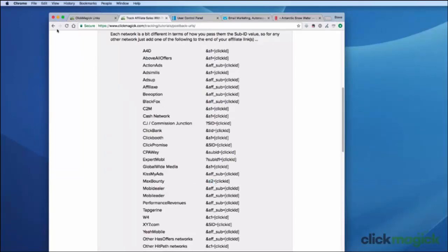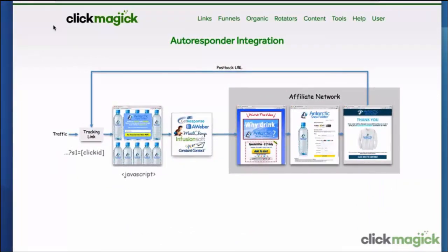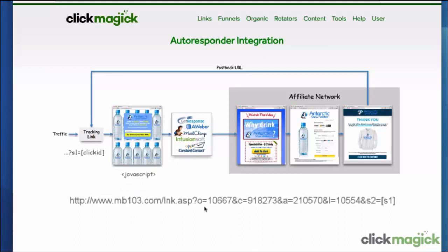We now have the three key pieces of information you need to integrate ClickMagick with your autoresponder and affiliate network. First, the link to the opt-in page has the click ID in the S1 variable of its query string. Second, the ClickMagick JavaScript code will replace the [S1] token anywhere it finds it in the HTML code of the opt-in page. Third, the thank you page URL from the autoresponder needs to go to MaxBounty in this example with the click ID in the S2 variable. If your network needs AFF_sub or some other variable name, you would change it accordingly. Our goal is simple: how do we get this S1 value to the URL for the thank you page? That's all we're trying to do.